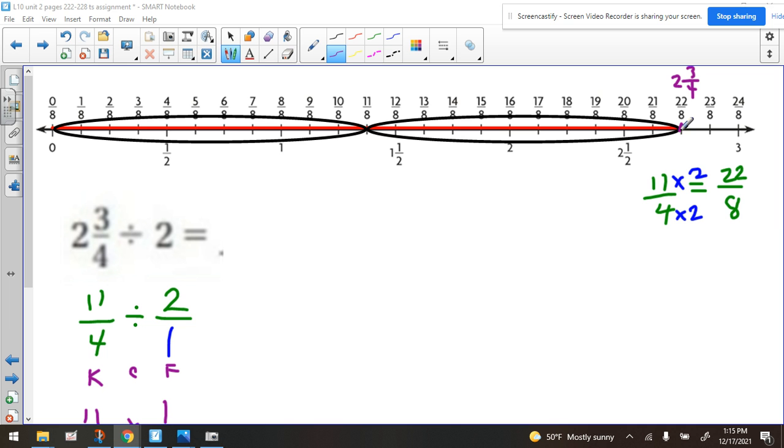So where this little purple notch is, this red line in length is two and three-fourths. Now if we're going to break that up into equal groups, we have group number one and group number two. How much is in each group? We can use the number line and look at the number that we get as our answer, which would be right here.